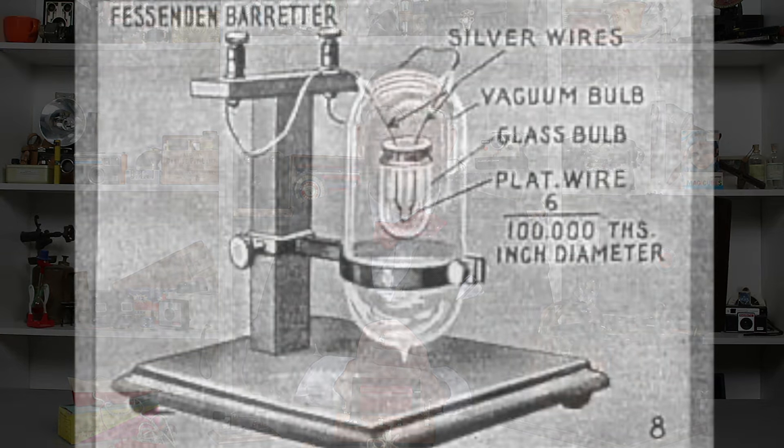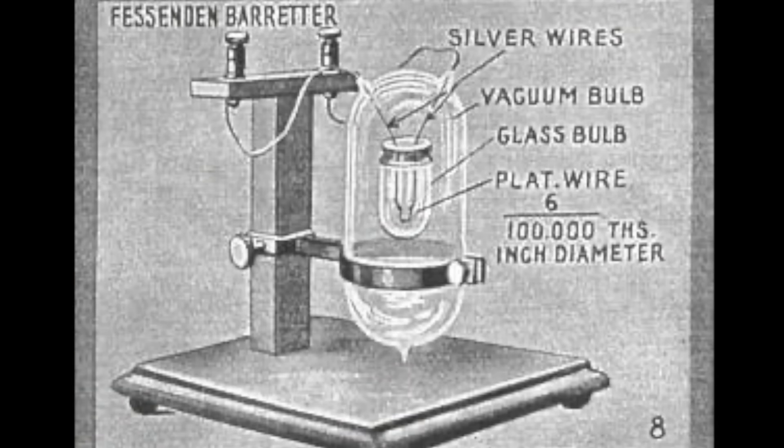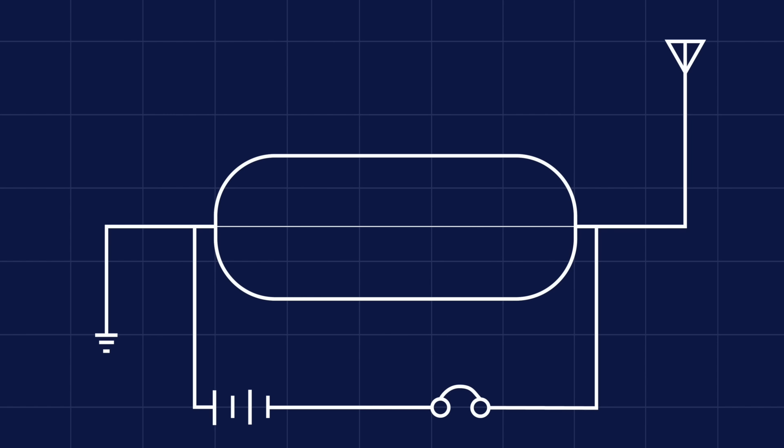Now, Fessenden developed two different types of detectors for his radio receivers. The first was called a hot wire barrier, and this consisted of a very fine piece of platinum-clad silver wire, aka Wollaston wire, encased in a glass envelope. Now, a bias voltage was applied to this to heat the wire up to a temperature where its thermal resistance would be the most variable. And then this was connected to the antenna of the receiver. And when the signal from the antenna was passed through the barrier, the fluctuating current would cause the wire to heat up and cool down, causing its resistance to fluctuate and causing the current in the bias circuit to fluctuate as well. And this would be picked up as an audible signal in the headphones. And the wire's thinness was such that it was fast enough to respond to audio frequency signals, but not fast enough to respond to radio frequency signals, meaning that it was able to demodulate AM signals.